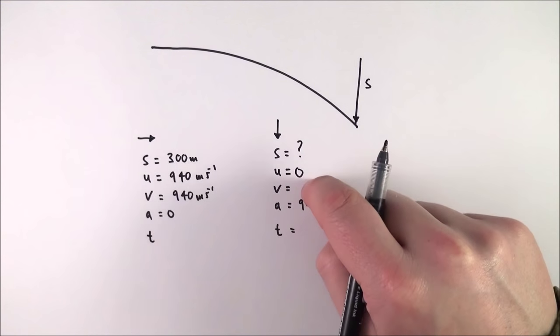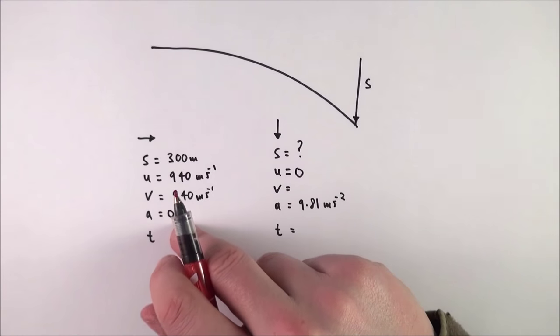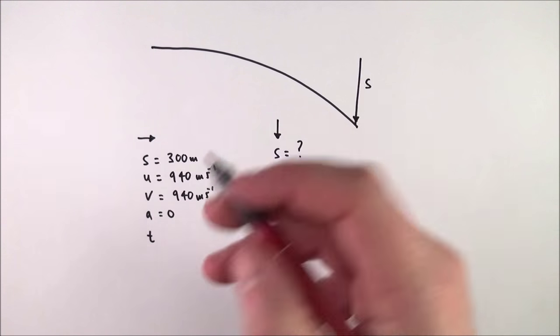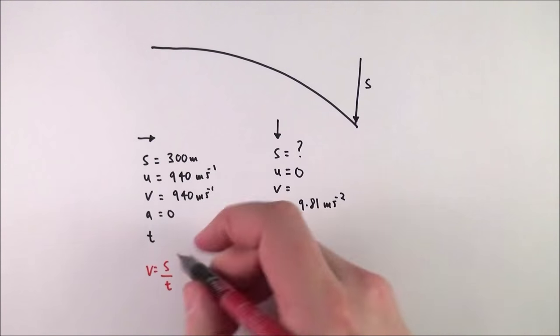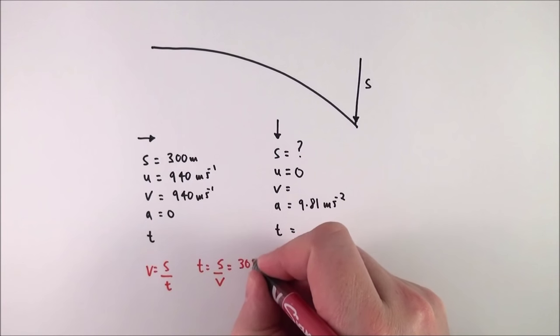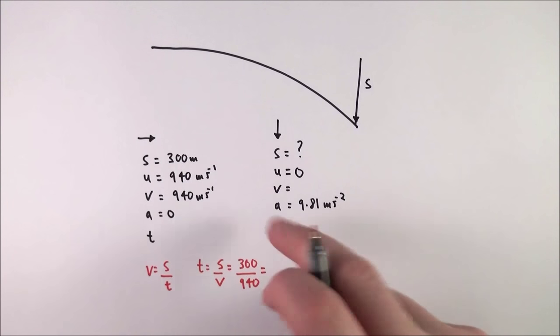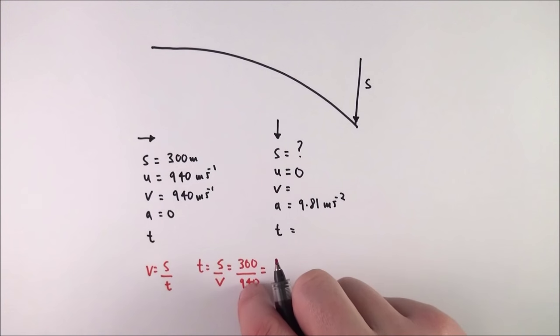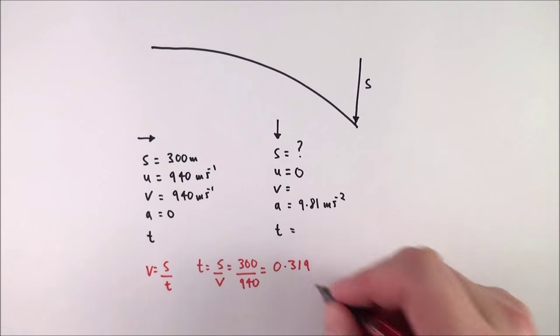So what I need to think about is what else I can work out. If we have something with a constant acceleration or in this case a zero acceleration, we know that basically the velocity is equal to the displacement traveled per unit time. I can rearrange this to say that time is equal to the displacement divided by the velocity, which in this case the displacement horizontally is 300 meters and it does it in 940 meters per second. This means the time it takes to travel is 300 over 940 which is equal to 0.319 of a second.